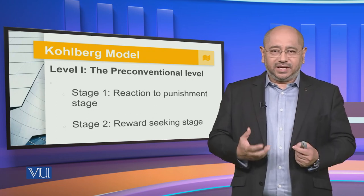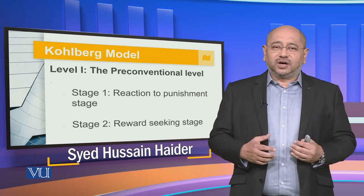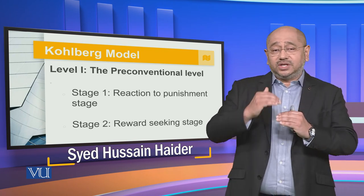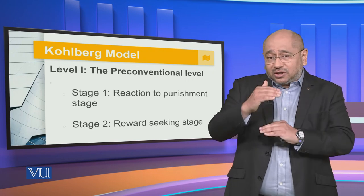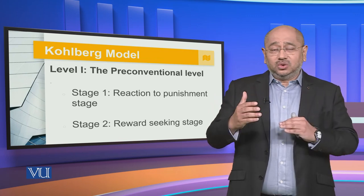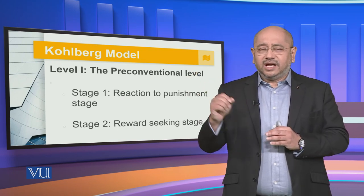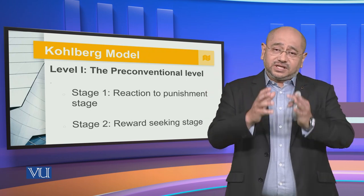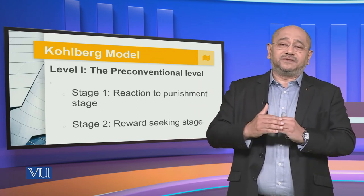Going beyond the semantics, I would like to divide these stages of human development according to age. We can divide the human being into six age groups: level one from zero to four years, level two from four to eight or nine years, then eight or nine to thirteen, then thirteen to nineteen, then nineteen to thirty-five, and then thirty-five and beyond.